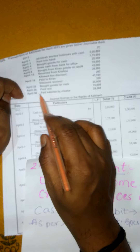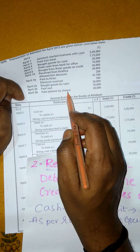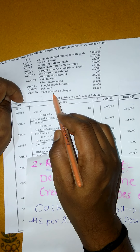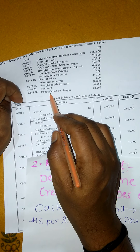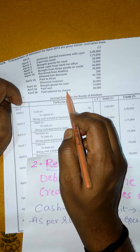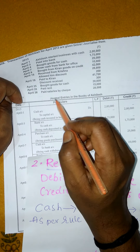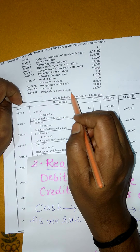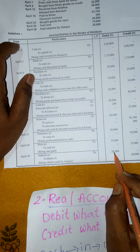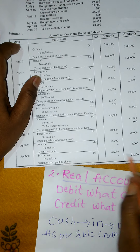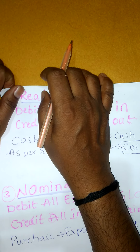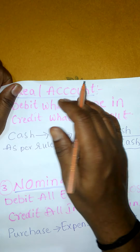Next — April 30th, paid salaries by cheque. By cheque kaante bank ga consider chayahali. Salaries debit ga chupinchadam jaruthundi — as per nominal account salary expenses business ki, andhe kanni debit all expenses — salaries ni debit ga chupinchalhi. Bank — cheque kaante bank — as per personal account credit giver. Bank isthundi kabatti bank ni credit ga chupinchadam jaruthundi. Salaries debited 28,000, to bank account 28,000. Being salaries paid by cheque. Ee vidanga journal entries prepare chayadam jaruthundi. All andarki thank you. Jai Hind.